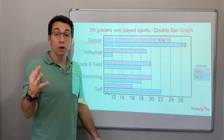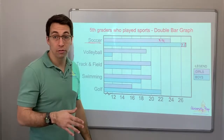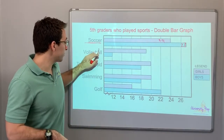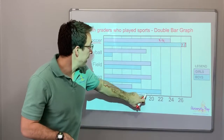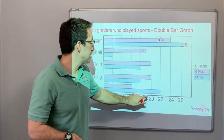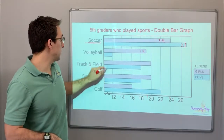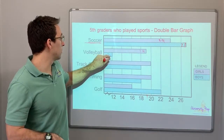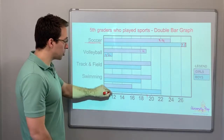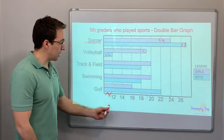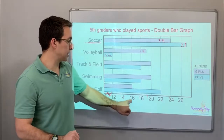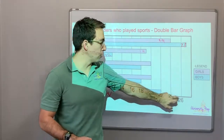Three more boys played soccer than girls. Volleyball: 18, 20 — so this is 19 girls, and 12 boys. Do you see the squiggly? The scale is even integers: 12, 14, 16, 18, 20, 22, 24, 26.